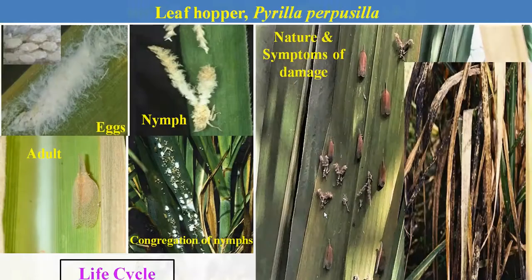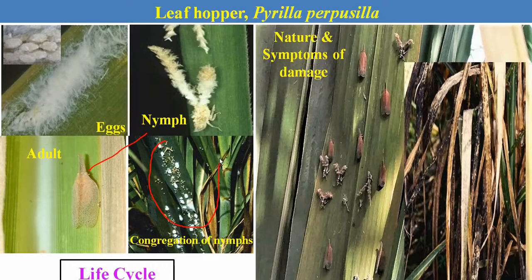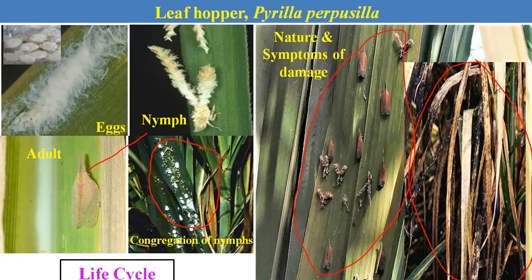The first sucking pest is the leafhopper, also called sugarcane pyrilla, with scientific name Pyrilla perpusilla. The metamorphosis is incomplete, hence it has three life stages: eggs, nymphs, and adults — both nymphs and adults are the damaging stages. Both congregate on the tender plant parts or leaves and continuously suck the cell sap. As a result of feeding, the leaves become yellowish in colour and dry. Additionally, this pest excretes a honeydew-like substance which develops a black sooty mold on the plant parts, making infested leaves blackish and directly affecting the photosynthetic rate. Besides feeding, this pest also reduces the sucrose percentage in sugarcane.